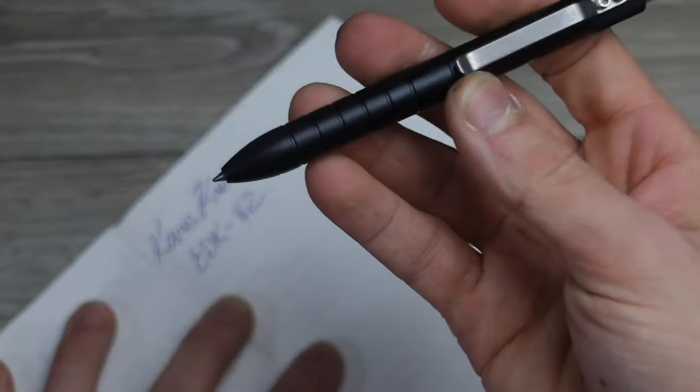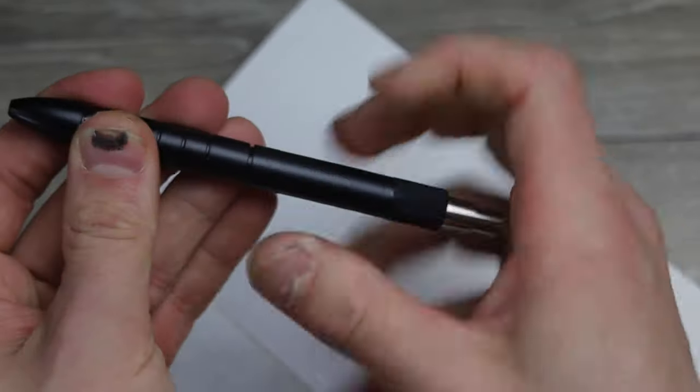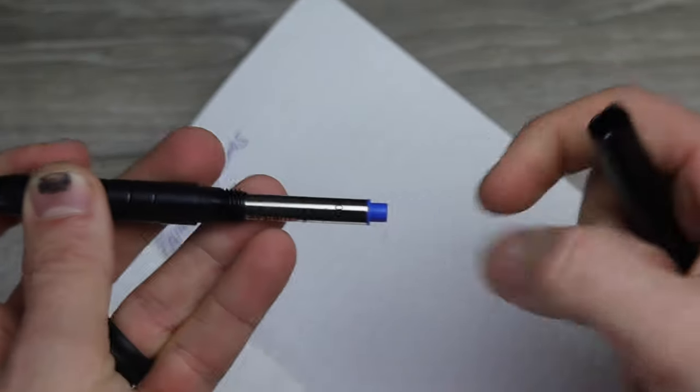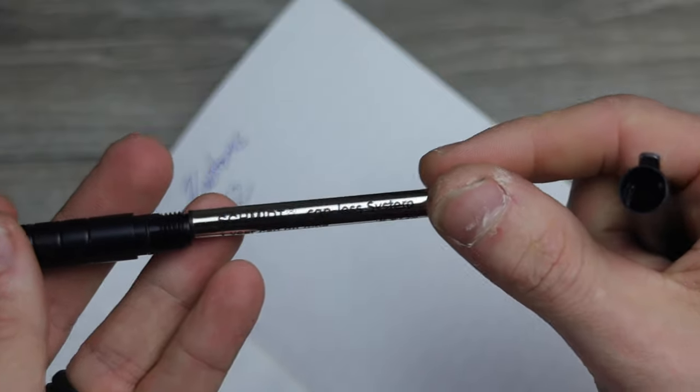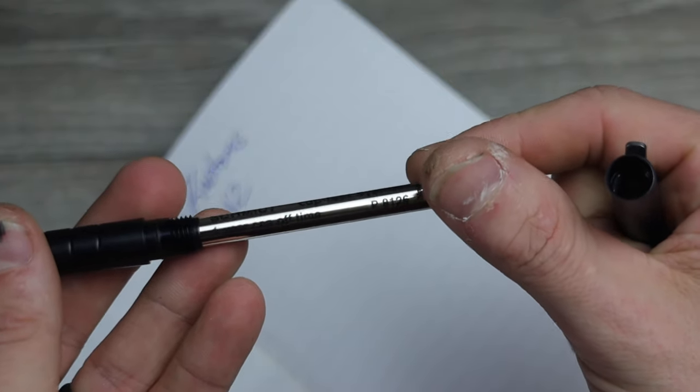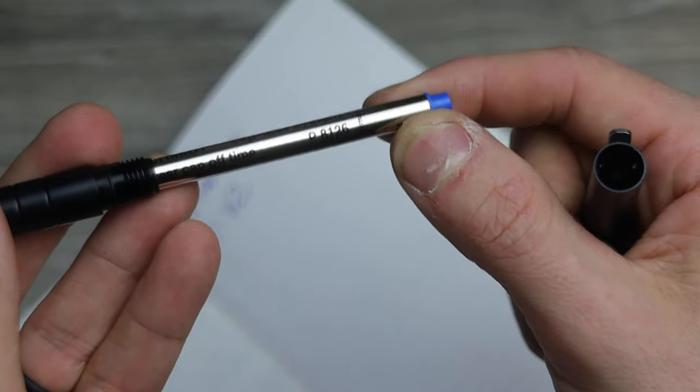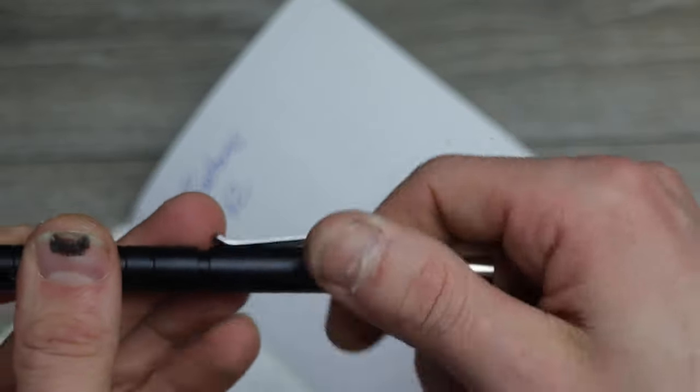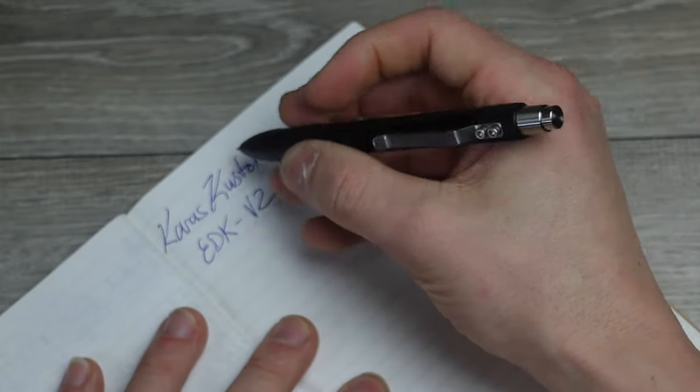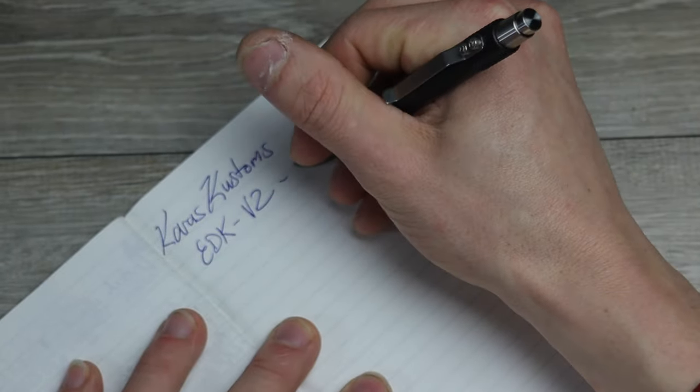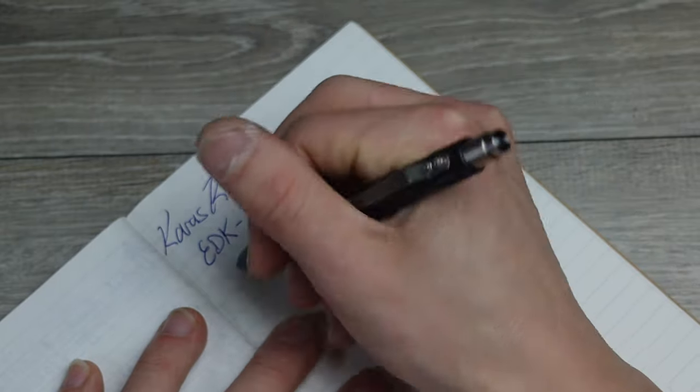Let's pop it out, let's pop it out while we're zoomed in. Schmidt capless system, one year cap off time. P8126 is the model number on the refills. I looked them up on Amazon before I bought this. They're really, it's like a four pack for like eight dollars or like six dollars or something. Blue Schmidt.